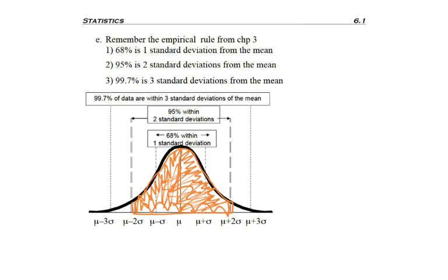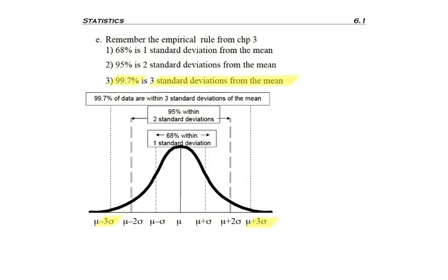So here you can see I've gone from the mean down by two standard deviations and up by two standard deviations, and hopefully you recognize that that gave me 95% of the area under the curve.